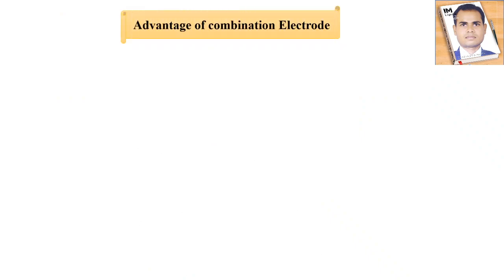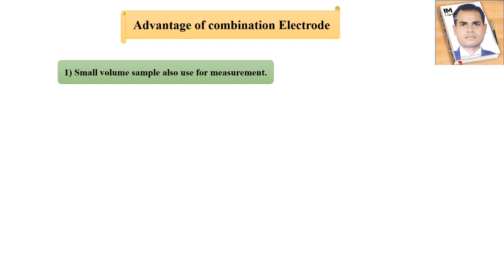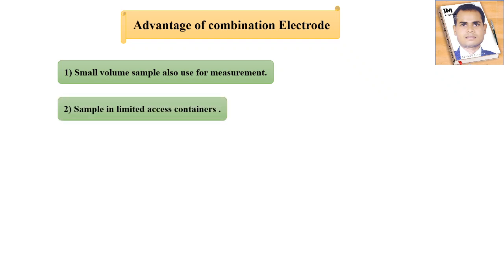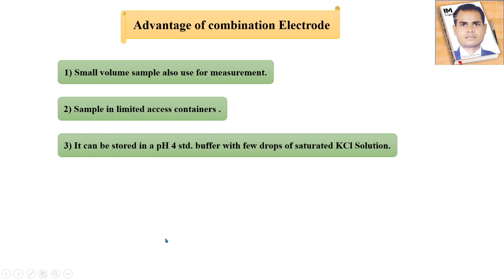Now we have to see the advantages of the combination electrode. The first advantage is that a small volume sample can also be used for measurements — if we have a very small amount of sample and need to analyze the hydrogen ion concentration, we can use the combination electrode. The next advantage is that it can be used with samples in limited access containers. Also, it can be stored in pH 4 standard buffer with a few drops of saturated KCl solution.